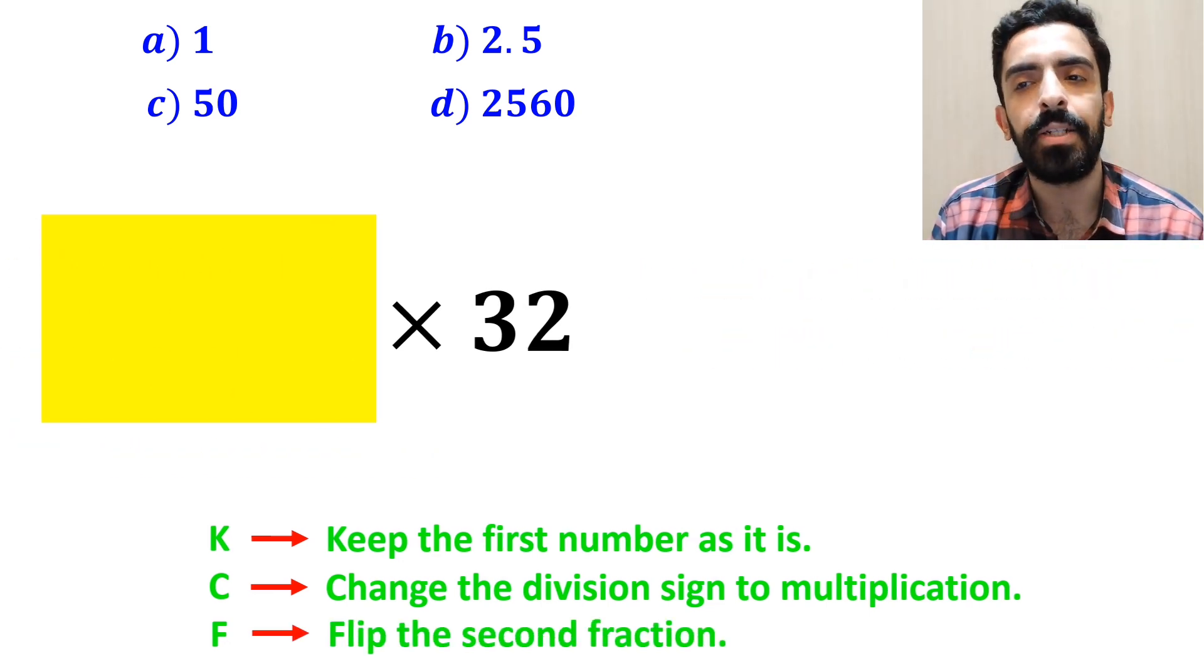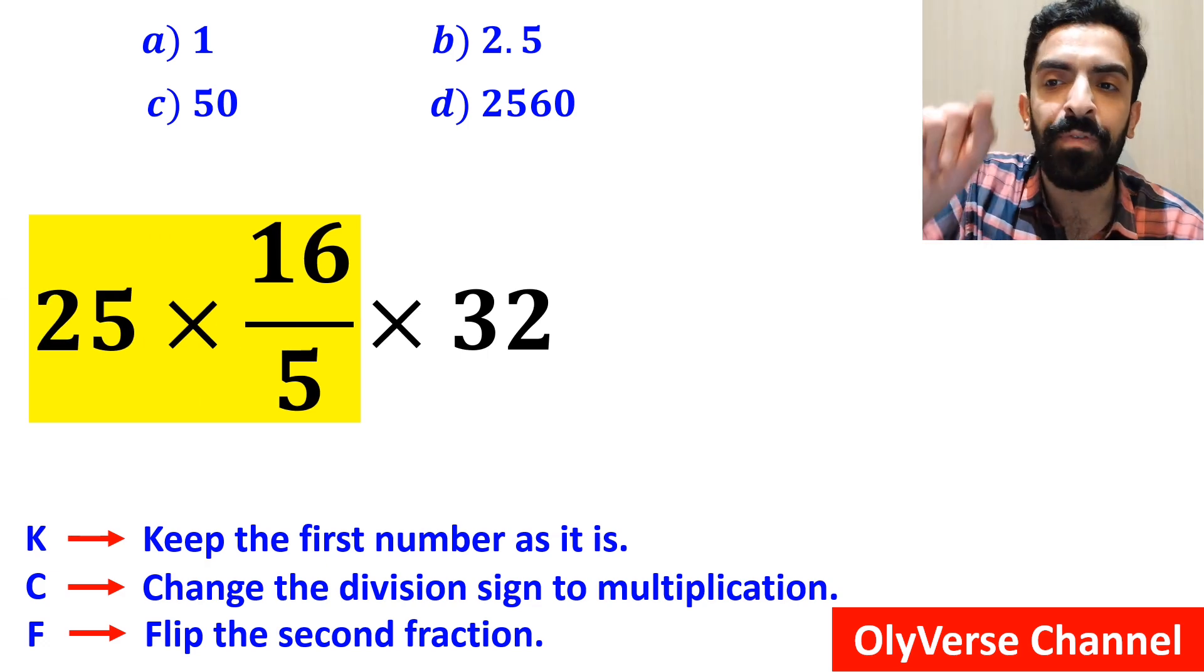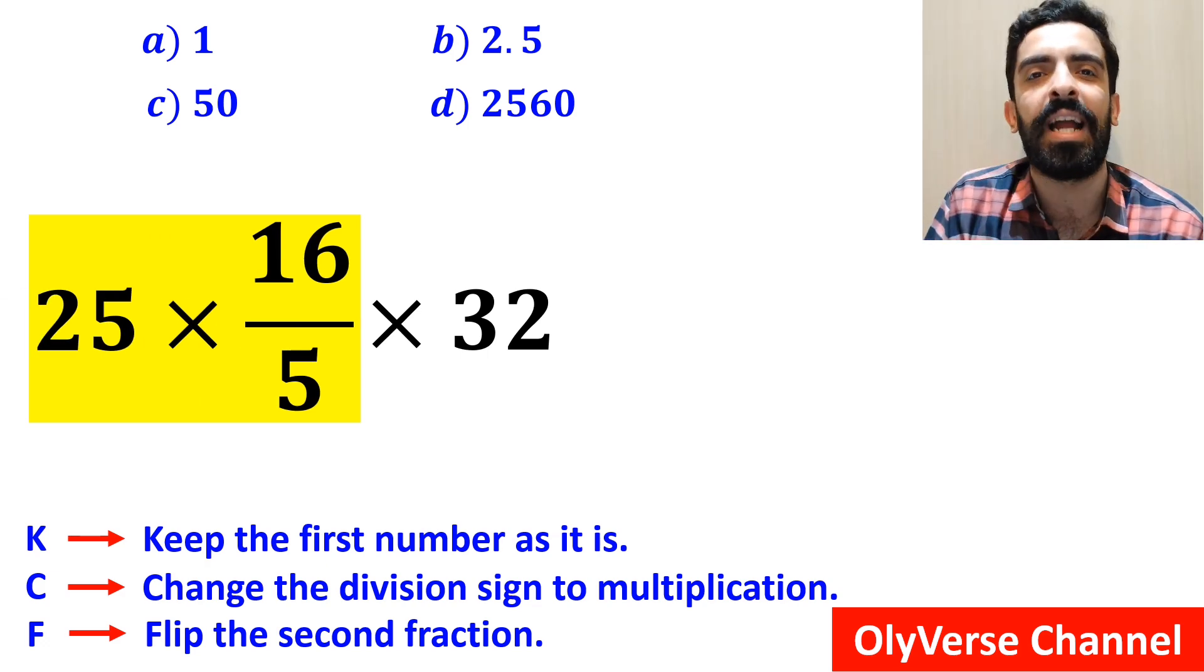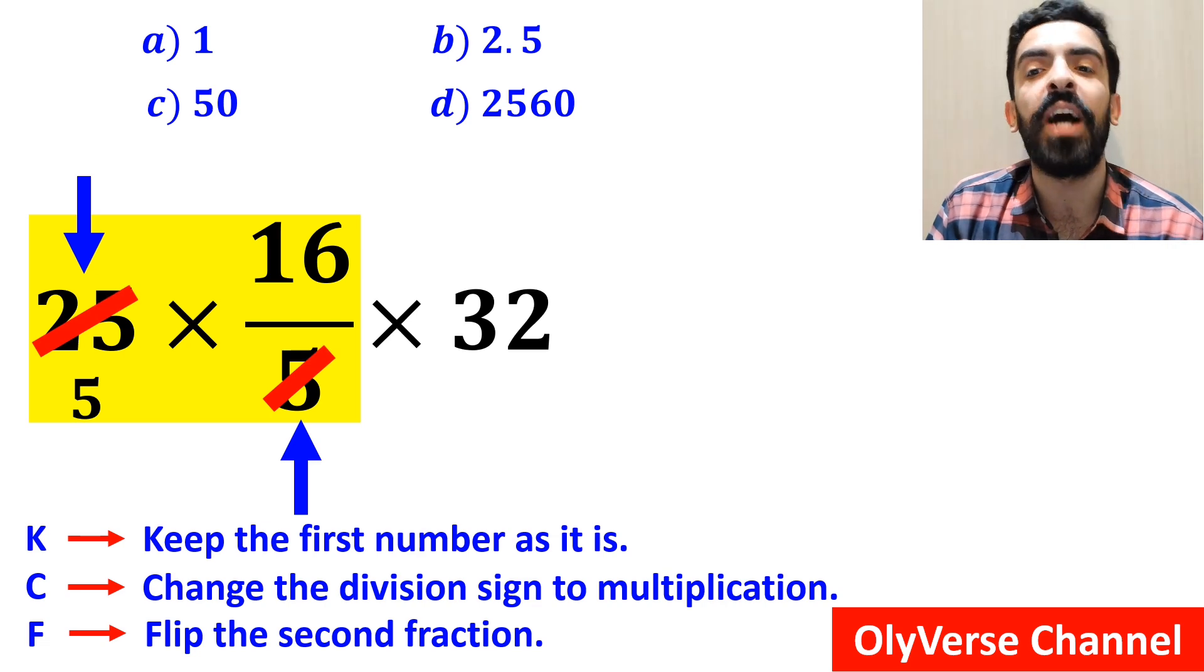So, we remove the highlighted part, and write this expression as 25 multiplied by 16 over 5. Now, we can easily simplify the number 25 with the 5 in the denominator, and instead of this expression, we can write 5 multiplied by 16.